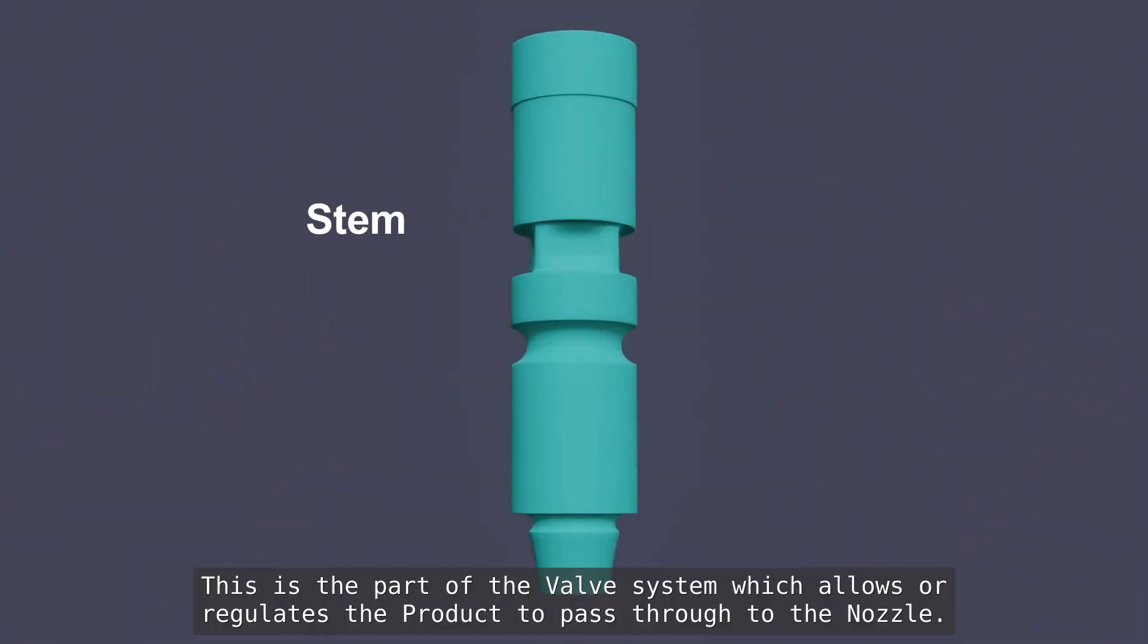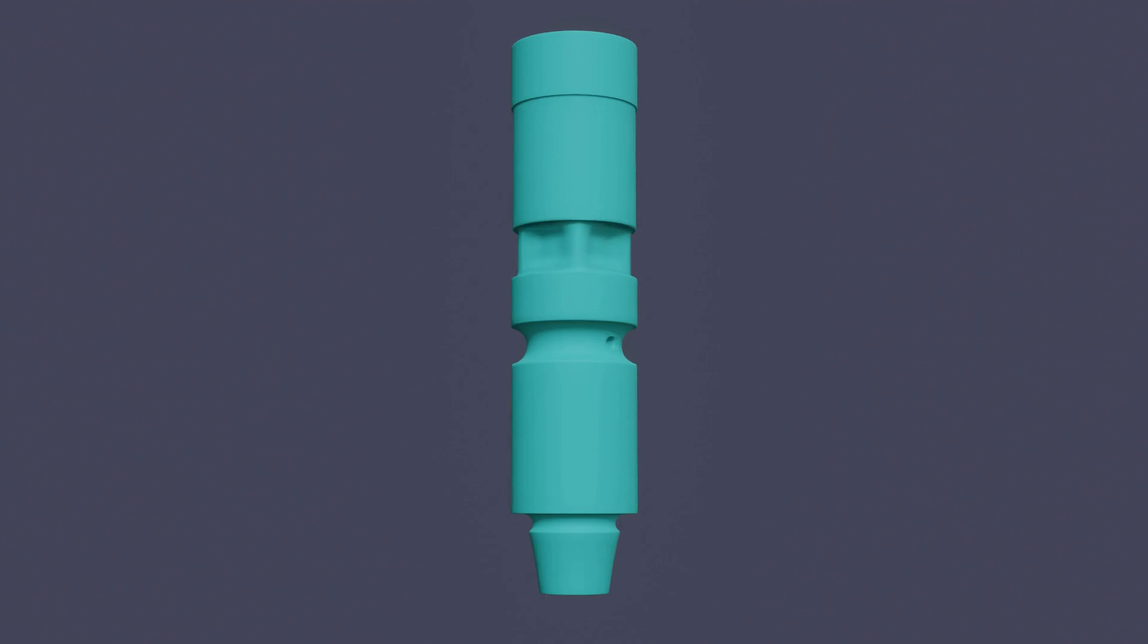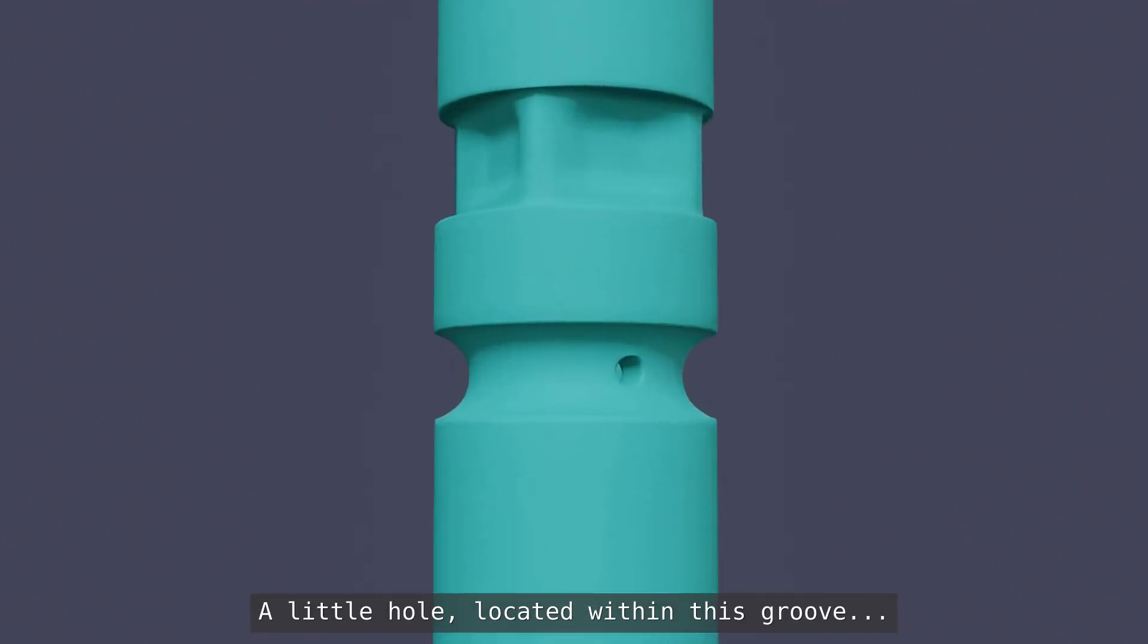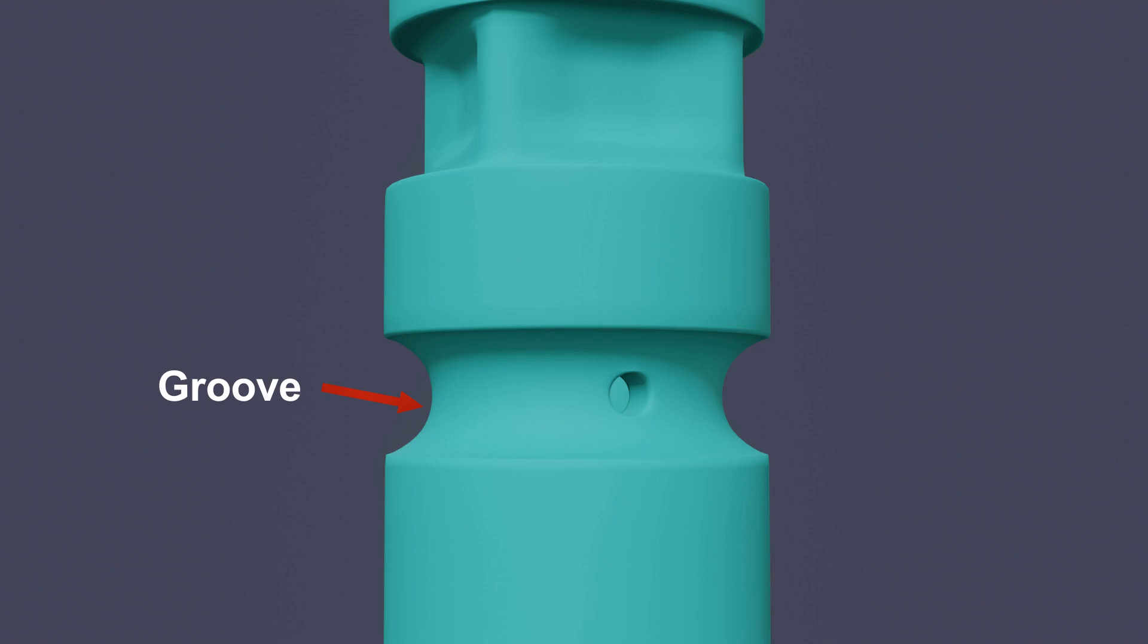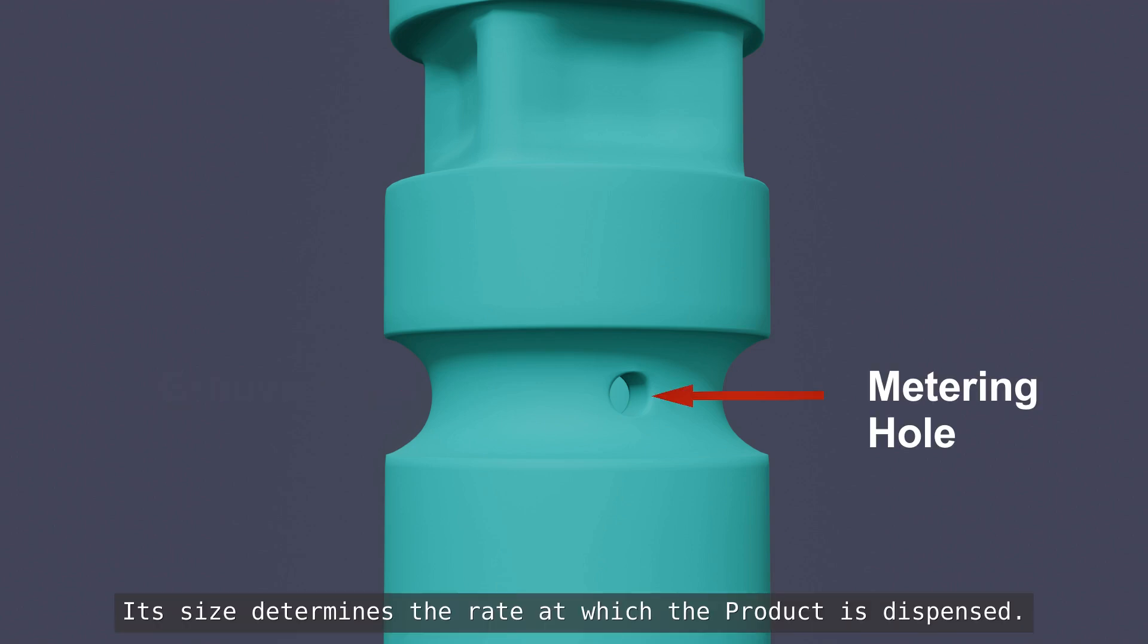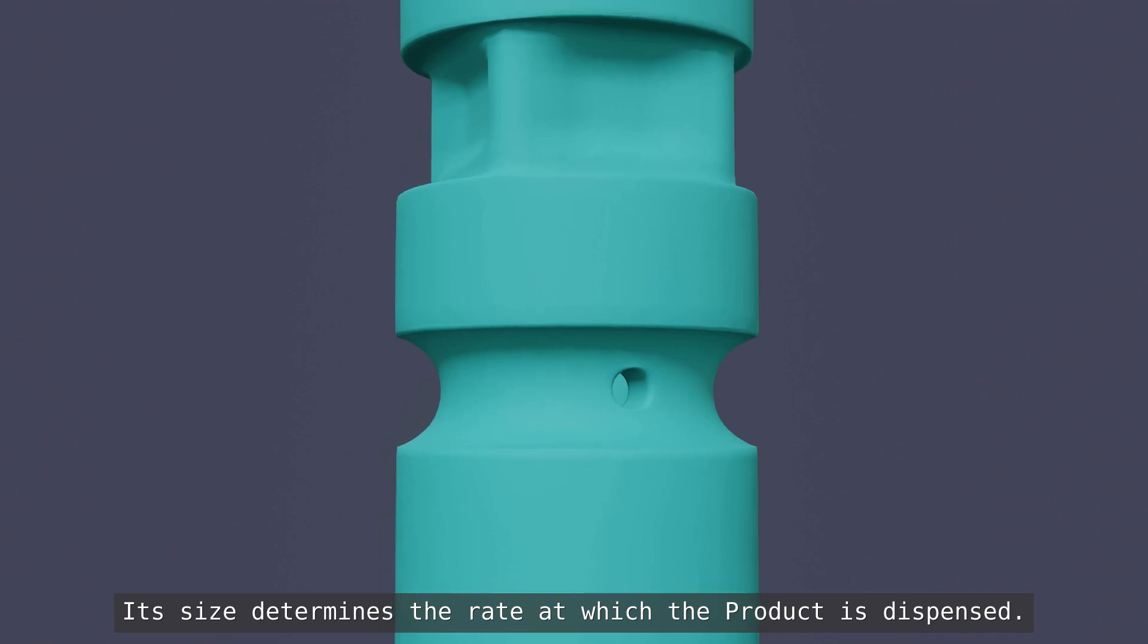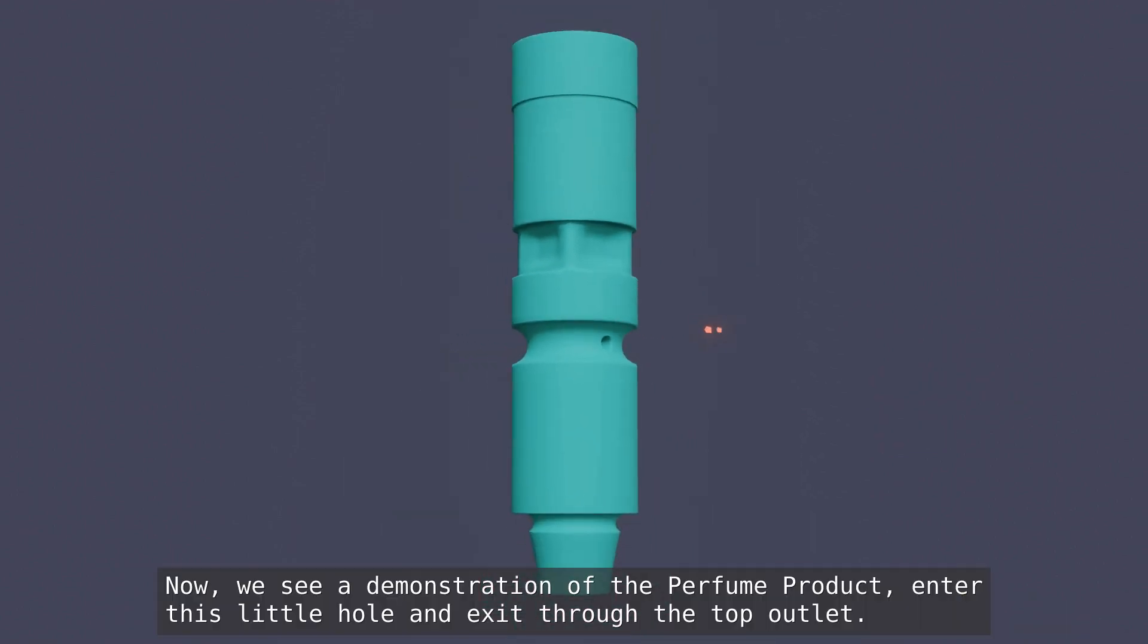The stem. This is the part of the valve system which allows or regulates the product to pass through to the nozzle. A little hole, located within this groove, creates an entry passage. It's called a metering hole. Its size determines the rate at which the product is dispensed. Now, we see a demonstration of the perfume product entering this little hole and exiting through the top outlet.